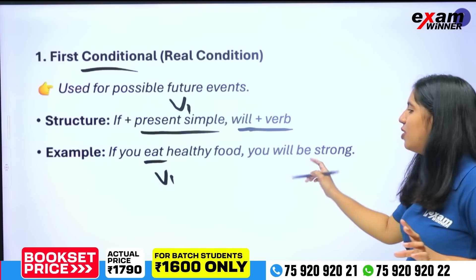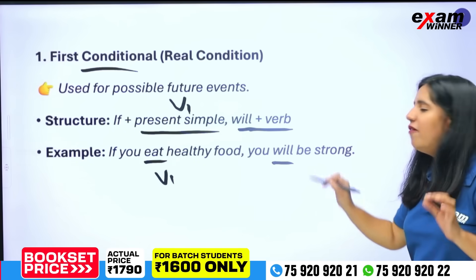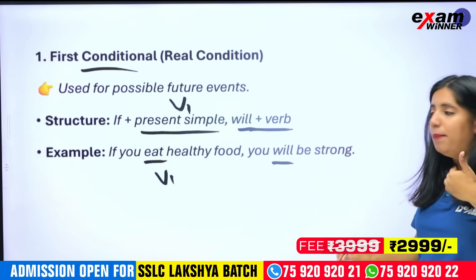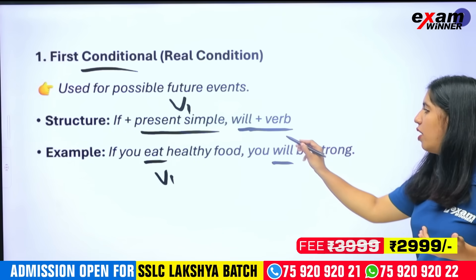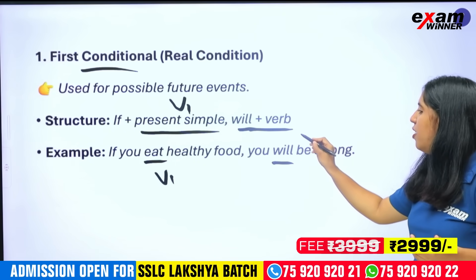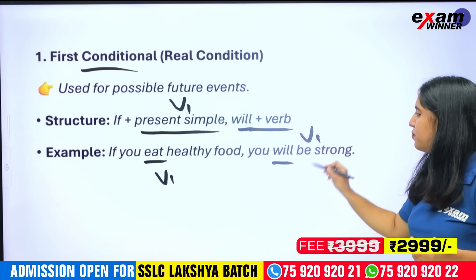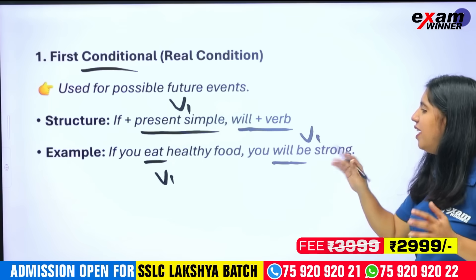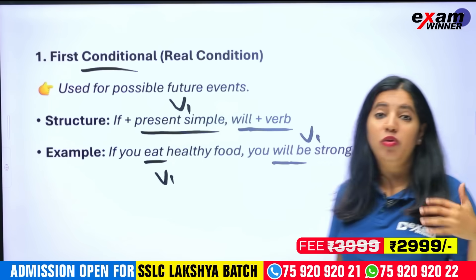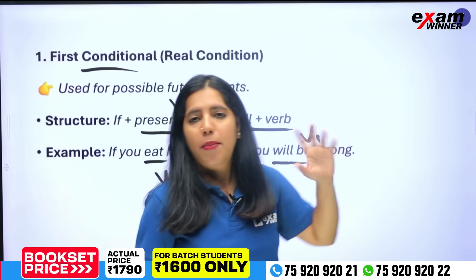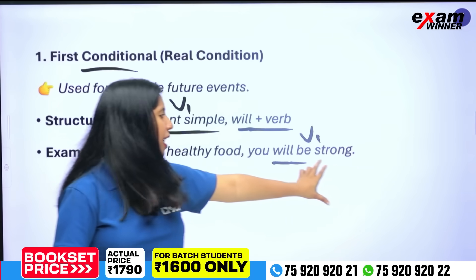Do not write a false word. Will be strong — that means 'will be strong.' Why do you say this specific form? Because in the first conditional, the main part uses will plus the base verb.